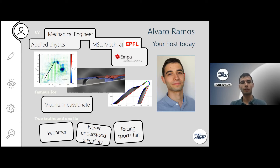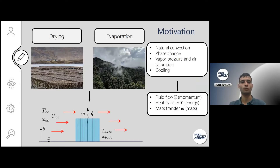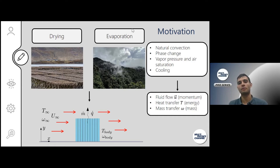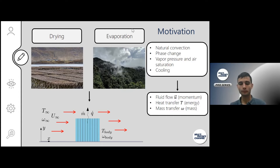Let's go directly into the topic of today: the motivation for why we should care about heat and mass transfer. These are processes that happen all over nature and industry. Here you can see two examples: drying of fish in northern Europe, and evaporation processes in regions important for understanding atmospheric dynamics. Physically speaking, there are many associated phenomena — natural convection, phase change, vapor pressure saturation, cooling associated with evaporation — but all of these complex processes sum up to three conservation laws: momentum, energy, and mass.